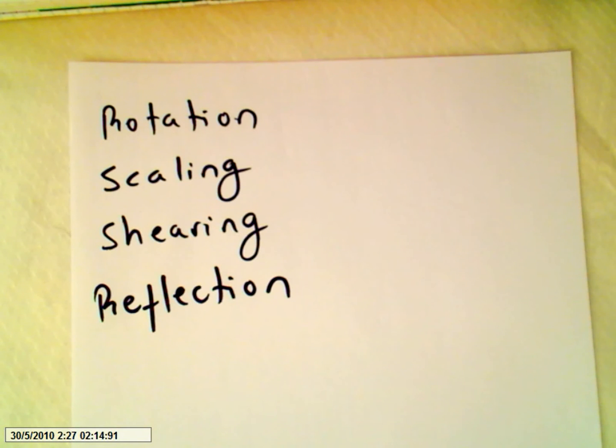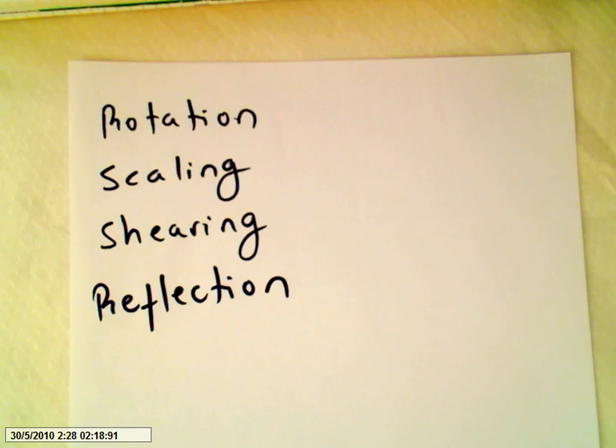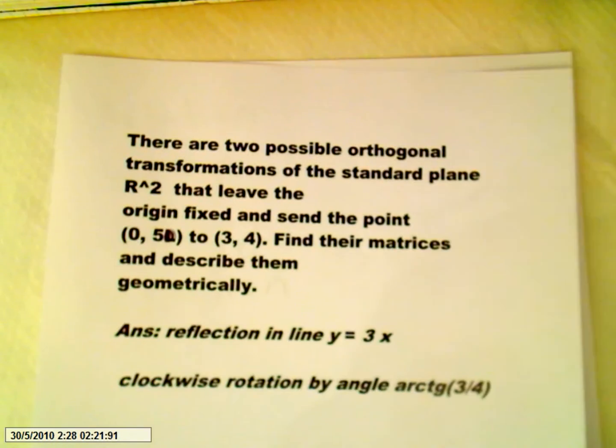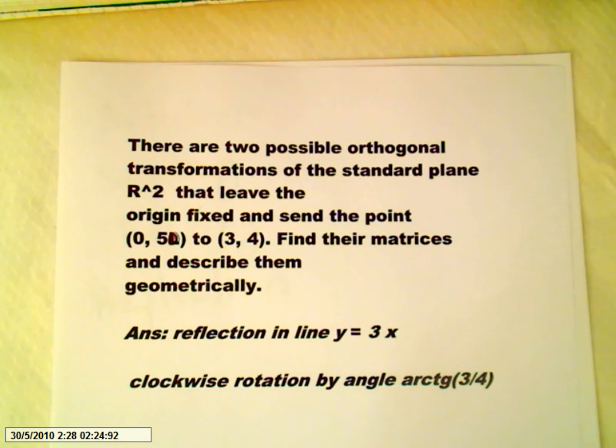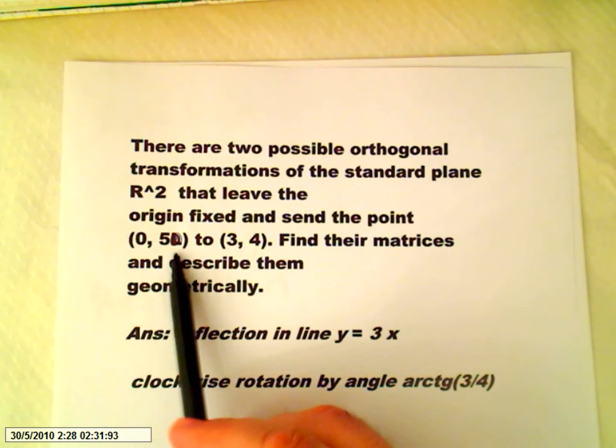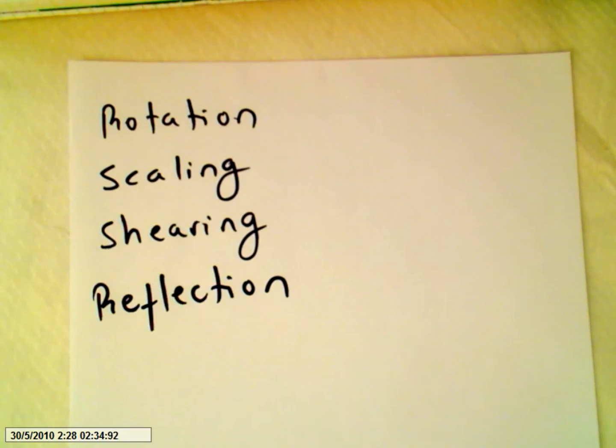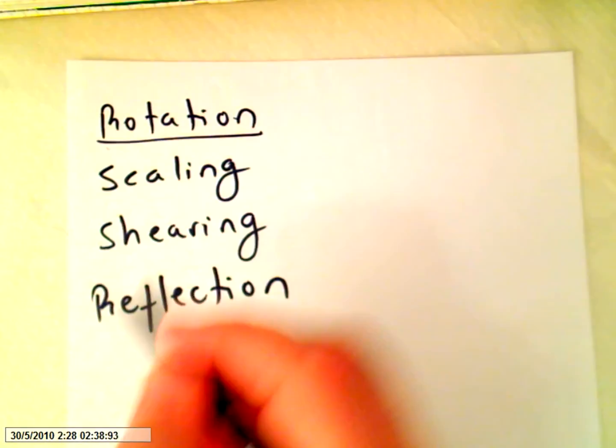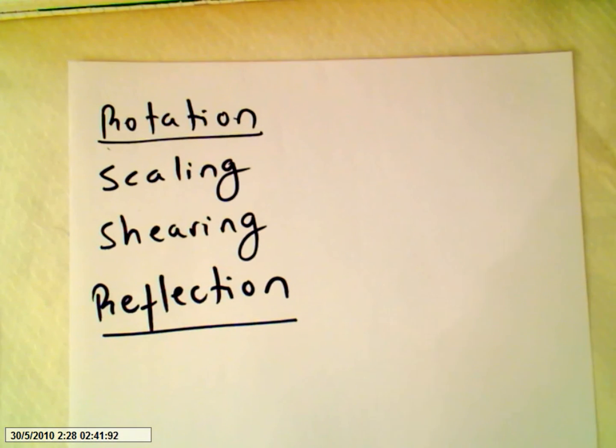Now I want to call your attention to the fact that if you look well at the points, this is a linear transformation with the origin fixed and sending the point (0,5) to (3,4). It's obvious that our two only candidates are rotation and reflection. Shearing is not possible because the points are not slanting. And scaling is out of question. So we are left with rotation and reflection.